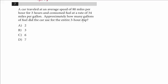A formula that you really should know is rate times time equals distance. So we're told the car traveled a speed of 80 miles per hour for 3 hours. We're going to think about how far did the car travel. 80 times 3, the car traveled 240 miles. We're told that it consumed fuel at 34 miles per gallon, and we want to figure out how many gallons did it use.